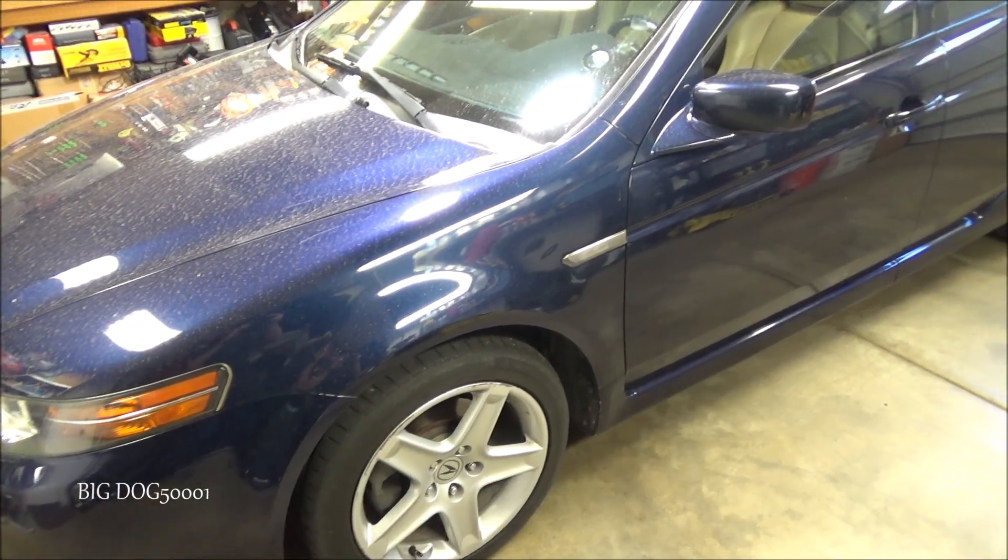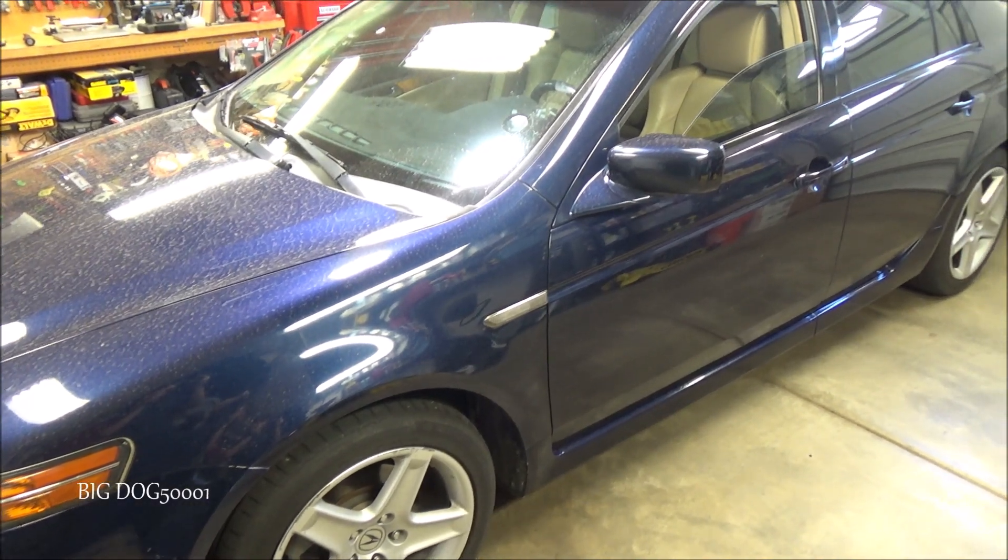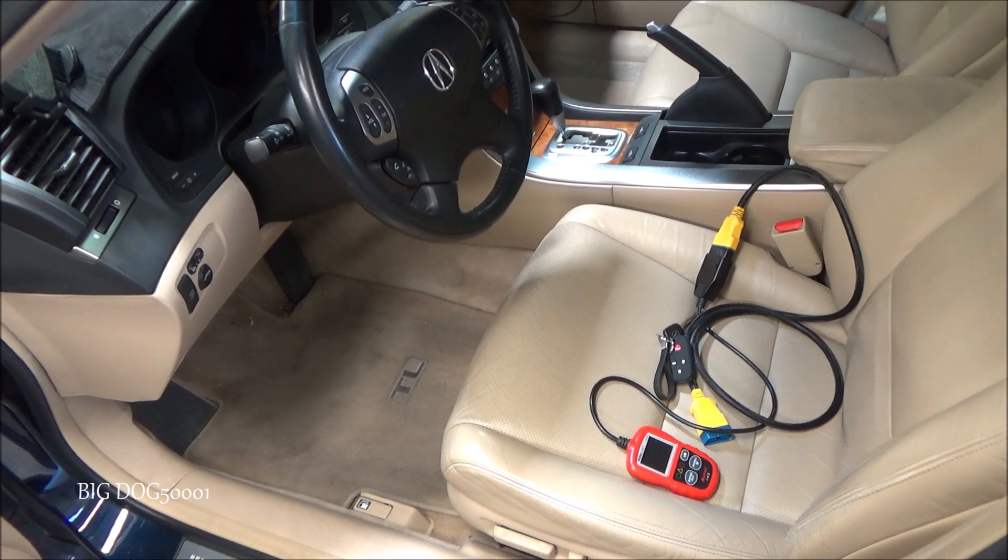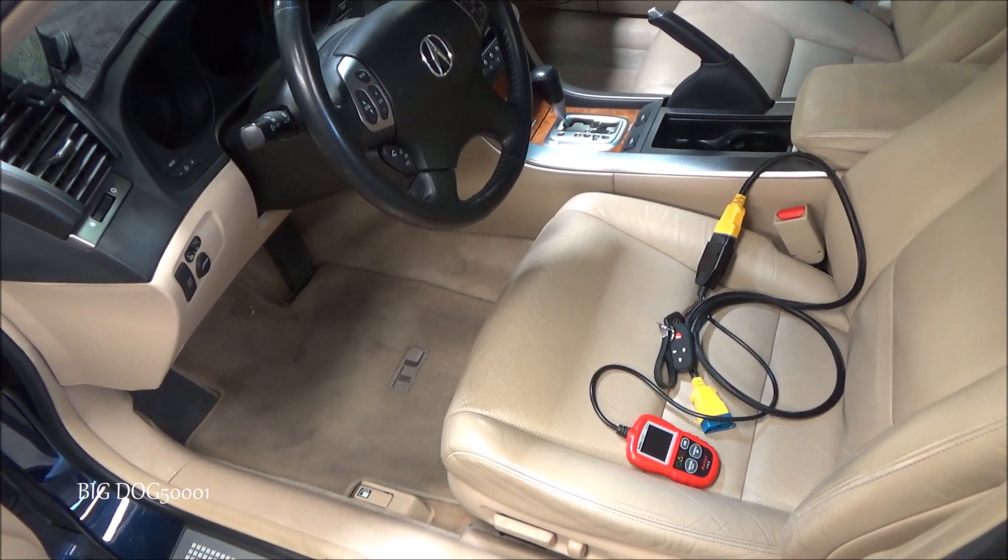This is what we're working on today, a 2006 Acura TL with a 3.2 liter V6 engine. The complaint on this one was a check engine light so I'm gonna hook the code reader up and see what codes we have stored.